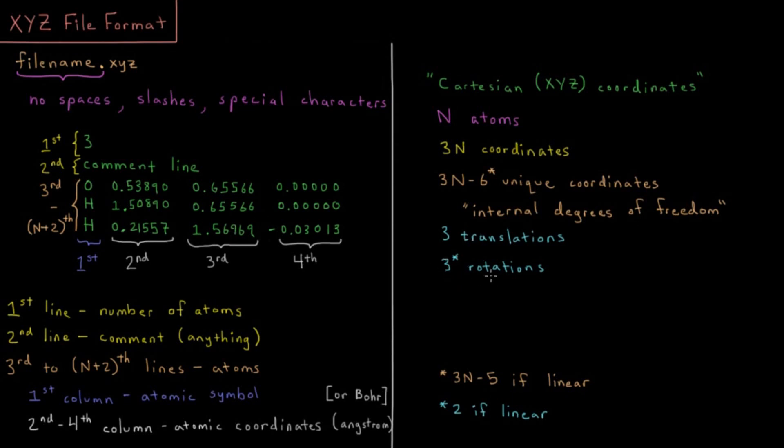Or we could have three rotations. If you're a non-linear molecule, you have three rotations, one around each of the axes. And if you're linear, you have two. So if you are non-linear, you have 3N minus 6, what we call unique coordinates or internal degrees of freedom. And if you're linear, you would have 3N minus 5 of those.